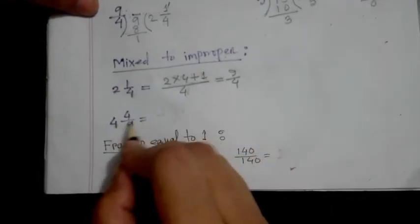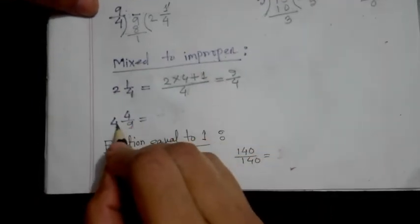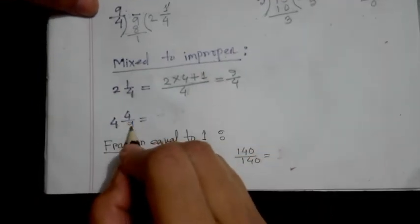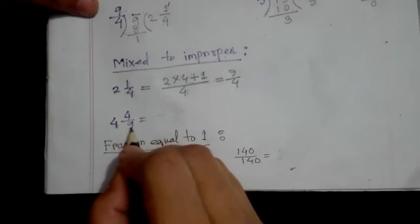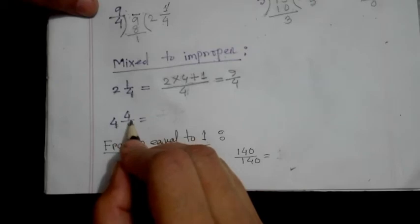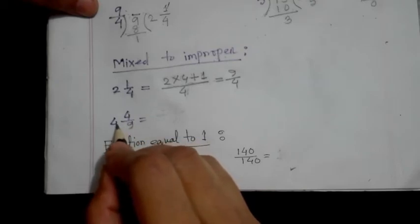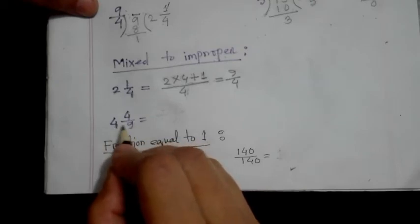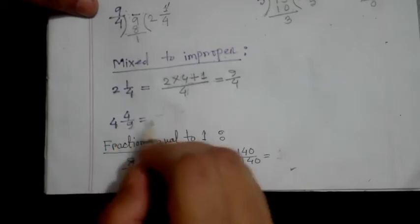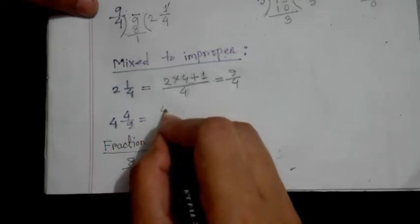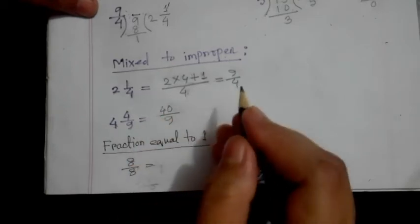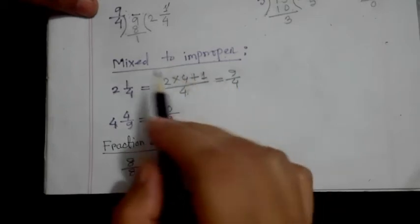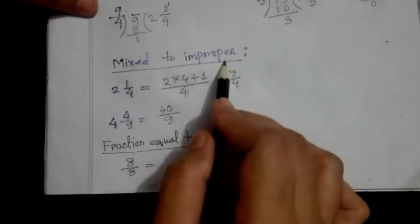Look at another example: 4 whole 4 by 9. So 4 times 9 is 36. 36 plus 4 equals 40. The answer is 40 by 9. In this way we can convert mixed to improper fraction.